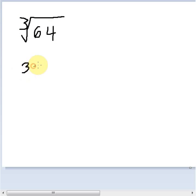So if I take 3 and I multiply it to 3, I get 9. And times 3, I get 27. So that's not it.